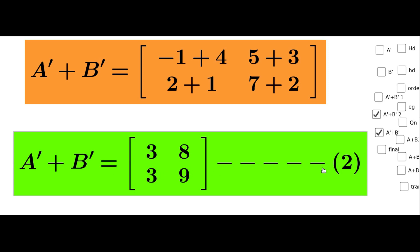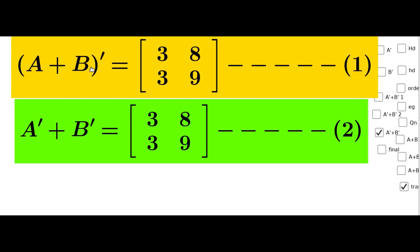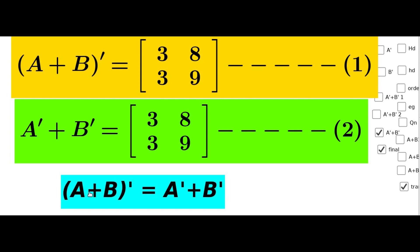That is equation 2. From equation 1: A plus B whole transpose equals matrix 3, 8, 3, 9. From equation 2: Aᵀ plus Bᵀ equals matrix 3, 8, 3, 9. From these two equations the matrices are equal, therefore A plus B whole transpose equals Aᵀ plus Bᵀ. The property is verified.